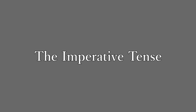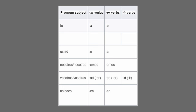Next up, we have the imperative tense — this is when you tell somebody to do something. Using hablar for AR verbs: tú habla (speak, to you), usted hable (speak formally), nosotros hablemos (let's speak), vosotros hablad (speak, to you all), ustedes hablen (speak, to you all). For ER verbs using comer: tú come (eat), usted coma (eat formally), nosotros comamos (let's eat), vosotros comed (eat, to you all), ustedes coman (eat, to you all). The only difference between ER and IR verbs is the vosotros conjugation — vosotros vivid (live, to you all).